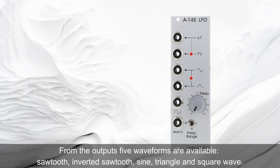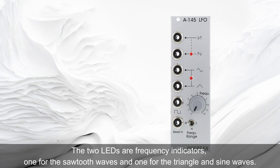From the five outputs, five waveforms are available: sawtooth, inverted sawtooth, sine, triangle, and square wave. The two LEDs are frequency indicators — one for the sawtooth waves and one for the triangle and sine waves.